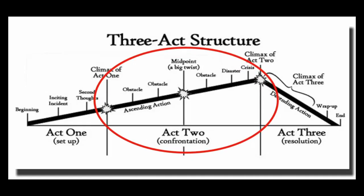The three-act structure is basically taking your entire plot and breaking it into three parts. The largest part of those three, as you can imagine, is the middle. The middle is about twice as large as the first part and the second part. This is a very basic breakdown — there's been a lot of movies, plays, and books that have gone outside of this structure and been very successful. But we are talking basics, and if you're a beginning writer, this is a really good guideline.